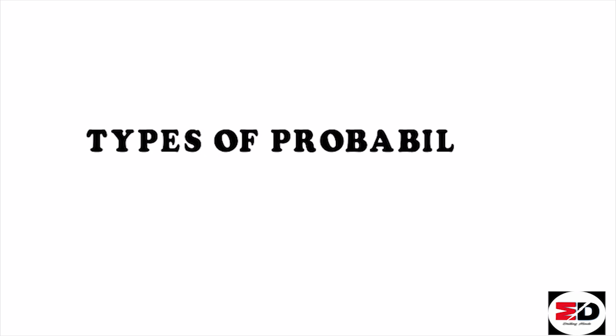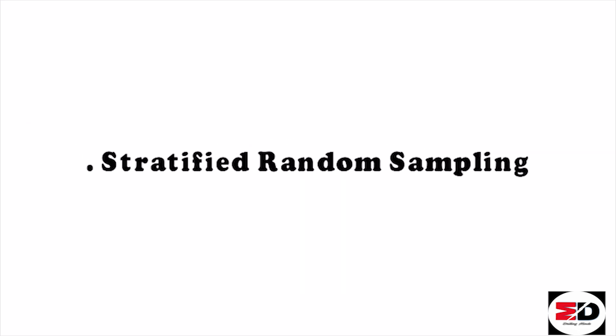Types of probability sampling — there are 5 types: first, simple random sampling; second, systematic random sampling; third, stratified random sampling; fourth, cluster sampling; fifth, multi-stage sampling.